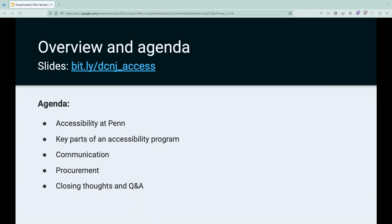Very quickly, I'm going to do a rundown of our agenda. If you want to access these slides, you can go to bit.ly/dcnj_access to get a copy. First, we'll look at a high-level overview of accessibility at Penn. Next, we'll go into key parts of a successful accessibility program, then talk about communicating about accessibility. We'll also spend time on procurement, and then have time for questions.